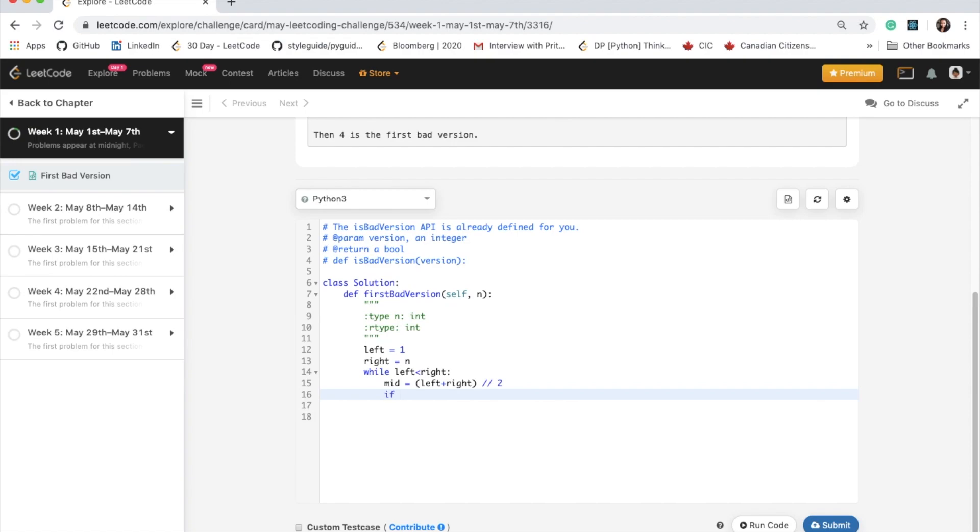And then what we need to do is check if our mid is the bad version. So if is bad version mid, then what we need to do is we are just going to set our right to the mid and this is what I explained before where we want to include the mid in our search because that could be the first bad version.